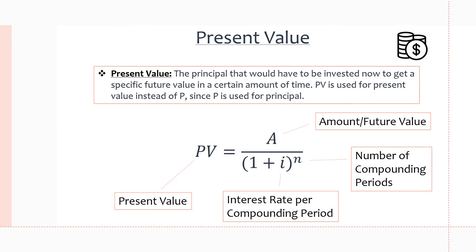The definition for present value is the principal — our initial value invested or borrowed — that we will need to invest or borrow to get a specific future value in a certain amount of time at a certain interest rate. Instead of P, we use PV to differentiate between principal and present value, because we might be calculating for one or the other, even though they mean the same thing.